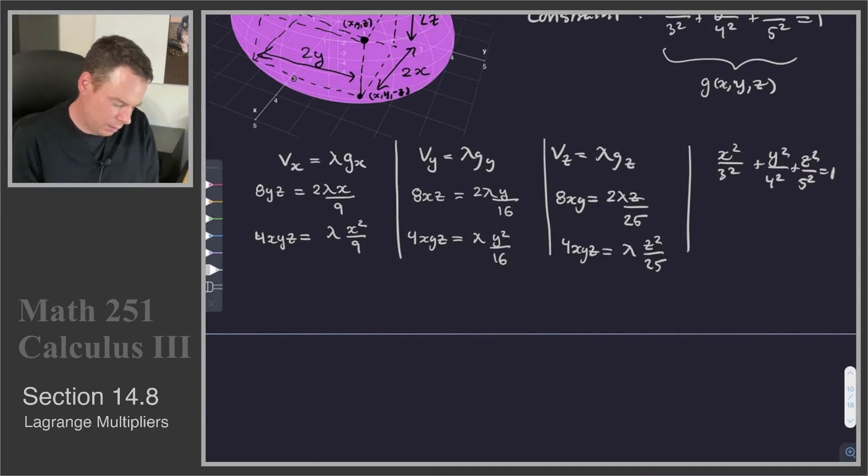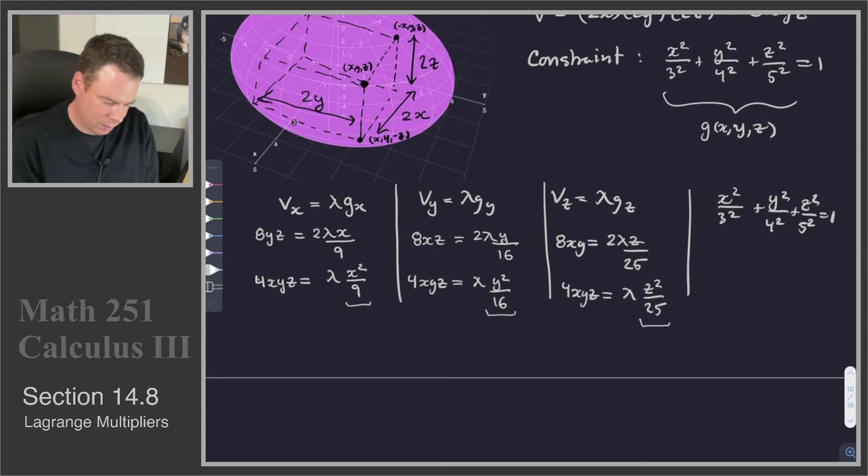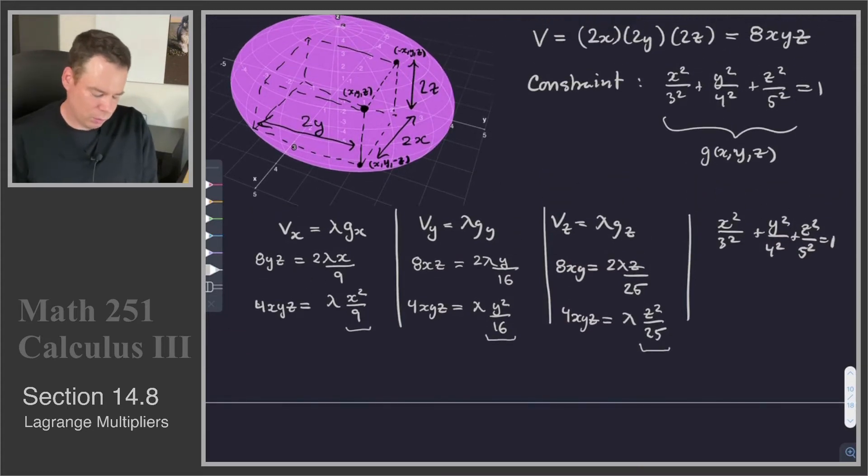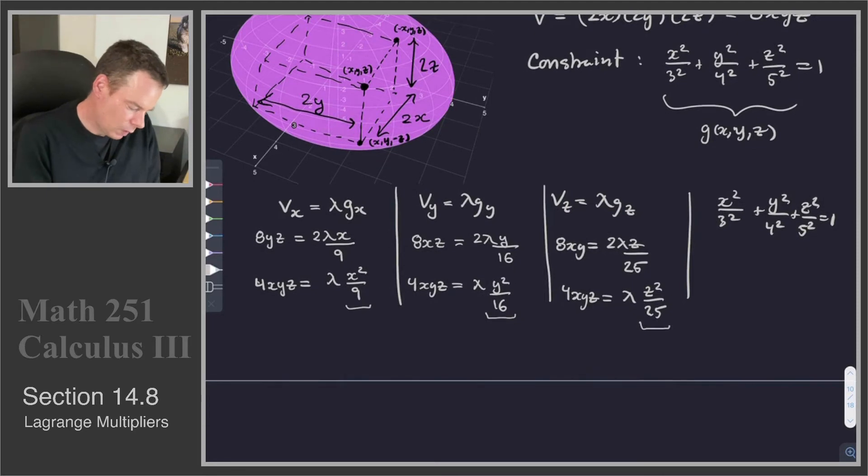Well, what's nice about this is I see that x²/9, y²/16, and z²/25, by the constraint, those add up to 1. So if I call this equation 1, this equation 2, and this equation 3, then I will sum 1 + 2 + 3.